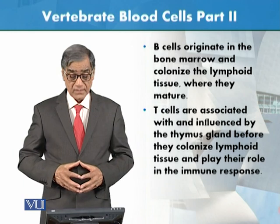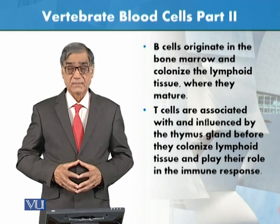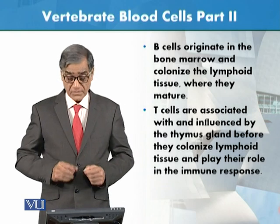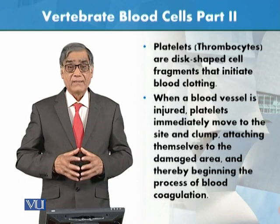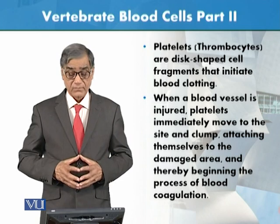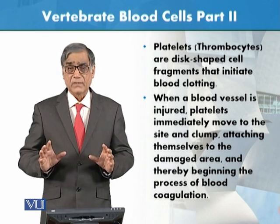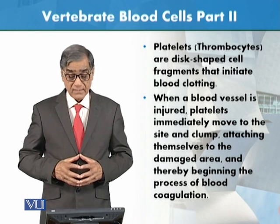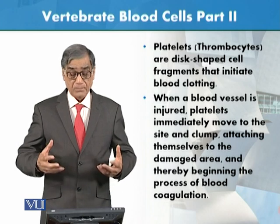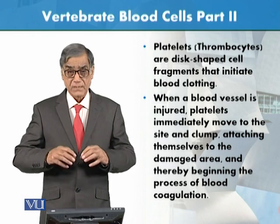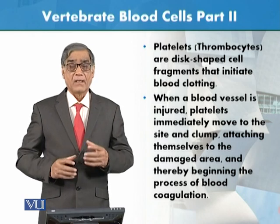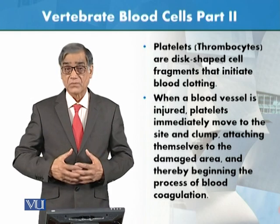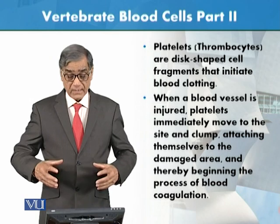T cells are associated with and influenced by the thymus gland, which is the lymphoid tissue where T cells mature. The third cell type is thrombocytes — the platelets. They are enucleated, being just fragments of cytoplasm. When a blood vessel is injured, platelets immediately rush to the emergency area in a very complicated chemical process.